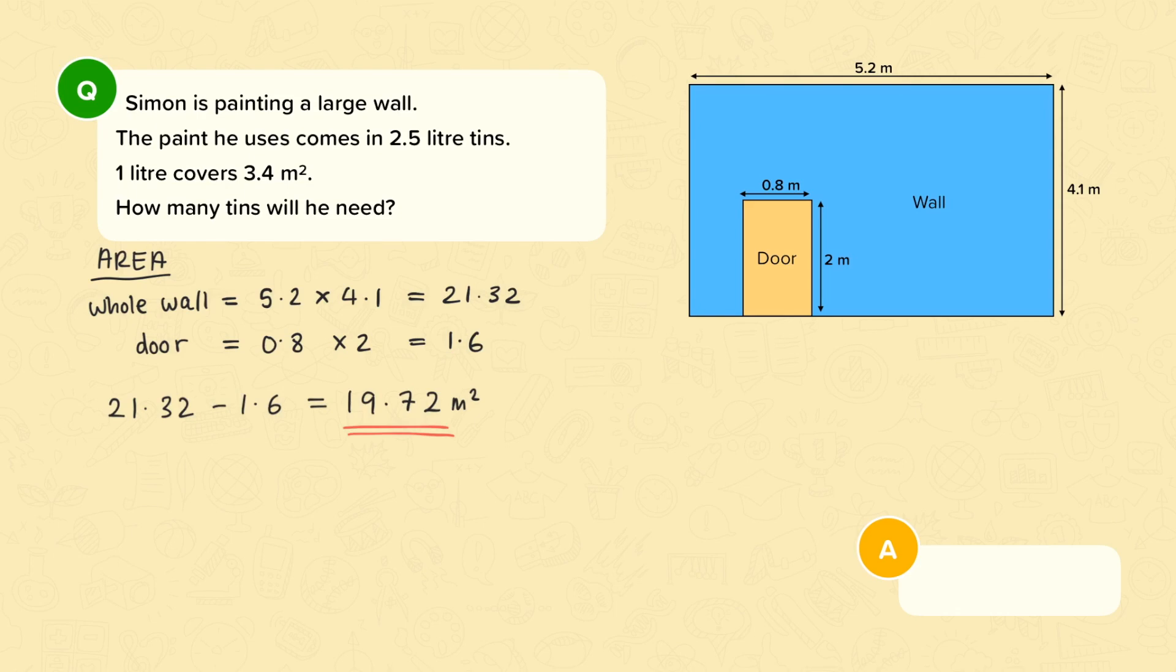Now we need to work out how many tins of paint he needs. So we're told that the paint comes in 2.5 litre tins and that 1 litre covers 3.4 meters squared. So if 1 litre covers 3.4 meters squared and we have 2.5 litres then we need to find 2.5 times 3.4. So 2.5 times 3.4 is 8.5. This tells me that 1 tin will cover 8.5 meters squared of wall.